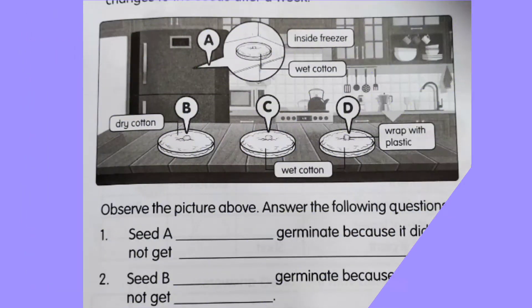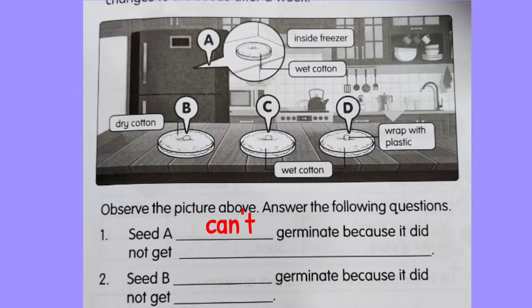This is what you've done last week in your activity book. Observe the picture and answer the following questions. Number one: seed E was placed inside the freezer — can it germinate or not? No, it cannot germinate because it did not get a suitable temperature.